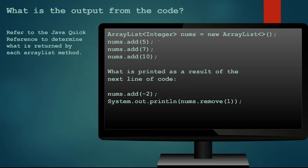If we continue with this code again we have 0, 1, 2, and now we have an index 3 and again notice that the nums dot remove 1 is inside of the println method so it's going to print whatever remove is going to return. Remove is going to return what was formerly at index 1. Well we just removed 7 so this is going to print 7.